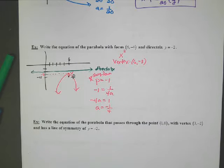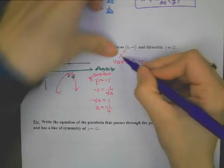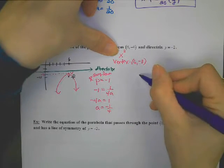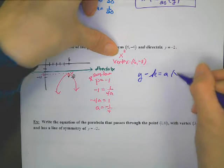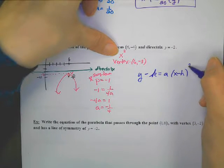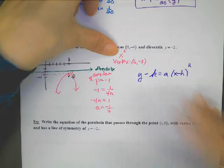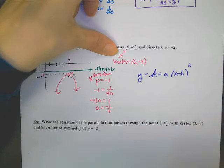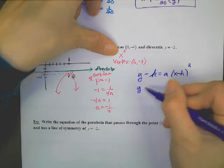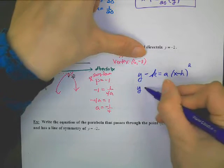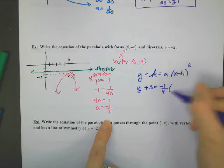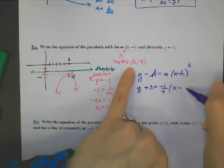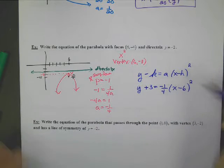Okay, I think we're ready for our equation — I've got the vertex and the a value. Since this is opening up and down, it's the x squared equation: y minus k equals a times (x minus h) squared. So y minus negative 3 is plus 3, the a value is negative 1/4, and it's (x minus 6) squared.